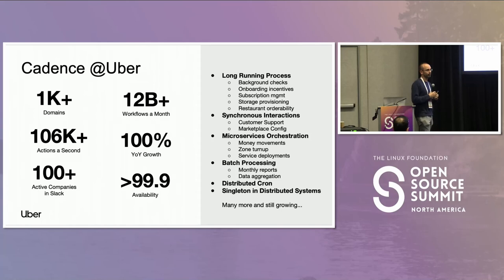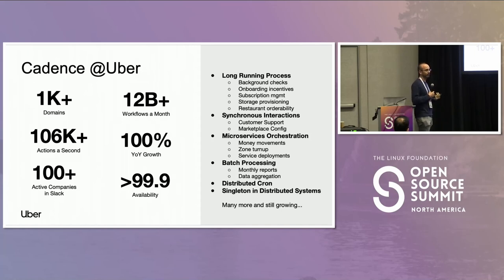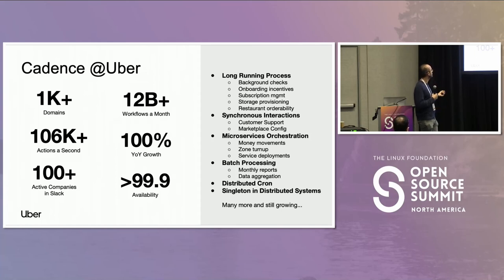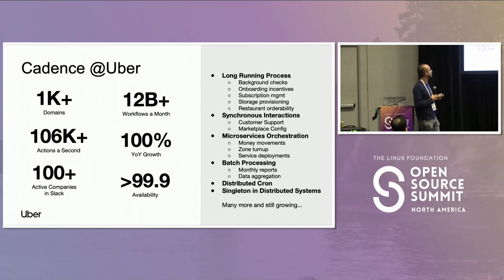Does it work? At Uber in our public workspace, we have over 100 companies including major ones like DoorDash, Coinbase, and HashiCorp using Cadence. For Uber alone: 12 billion workflows a month, powering over 1,000 services, over 100,000 updates a second, mapping to almost 300 billion updates a month, with three nines of availability. Use cases include long-running processes, synchronous interactions, microservice orchestration, batch processing, distributed cron, and singleton patterns in distributed systems.